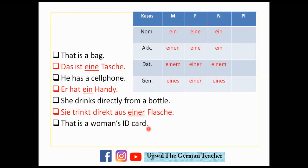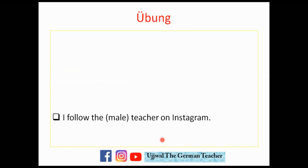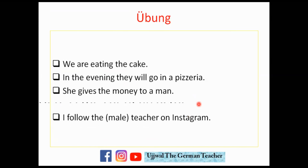The last example is genitive: 'a woman's ID card.' ID card is 'Ausweis', masculine — 'ein Ausweis'. For woman in genitive it is 'einer Frau'. So: 'Das ist ein Ausweis einer Frau.' Now I have five translations as homework — Übung — for you. Please translate them and write your answers in the comment section.